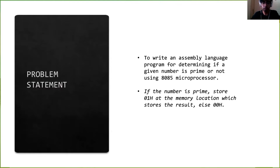A prime number is a number which has only two divisors: one and the number itself. Otherwise, if it has three or more divisors, it is a composite number. If the number is prime, we store a 01h value at the memory location which stores the result; else we store a 00h value. So if 01h is stored, we know the number is prime; otherwise, the number is composite.